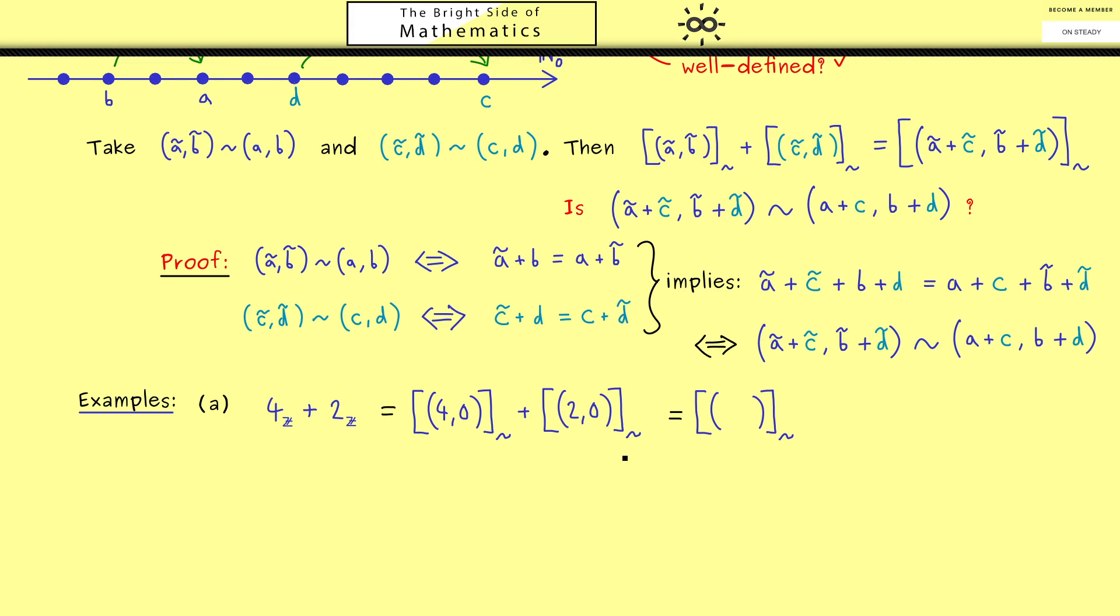At this point, we know how the addition should work. First we sum up the first components and then the second components. So here we get [6,0], which is by definition just 6 as an integer. So you see this is exactly what we expected. Similarly, all the additions we already had for the natural numbers will translate to the integers in the same way.